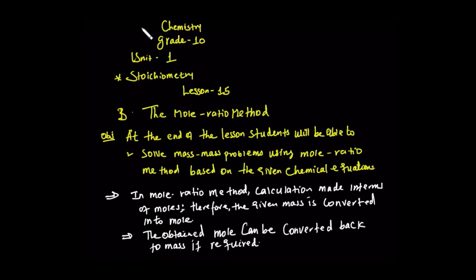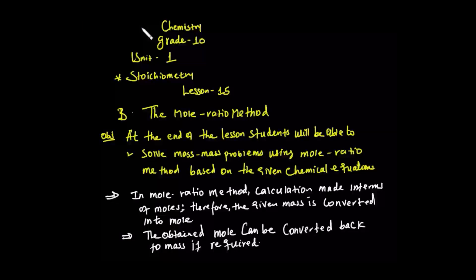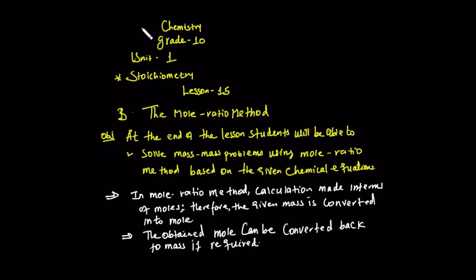Stoichiometry means it studies the quantitative relationship between reactant and product balance. So, mass-mass relationship — that means using mass-mass stoichiometry to solve the problem. We will look at the mass-mass relationship using mole ratio methods.